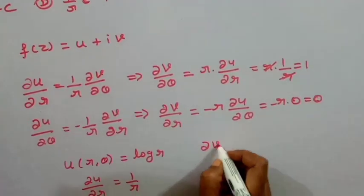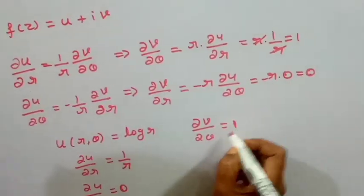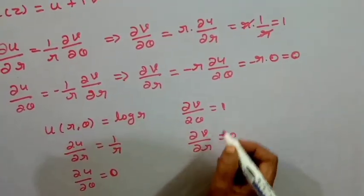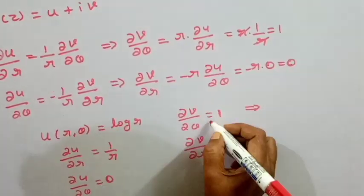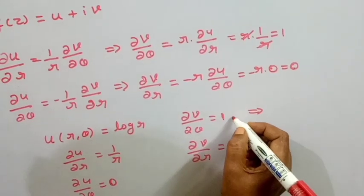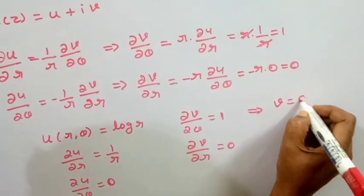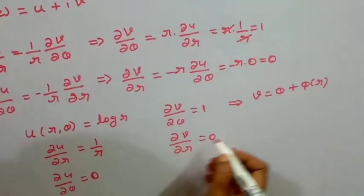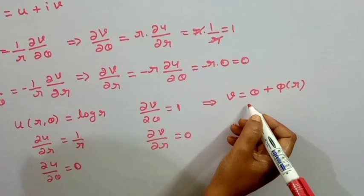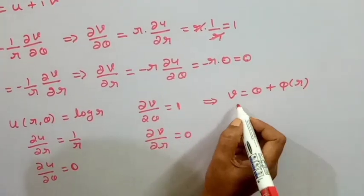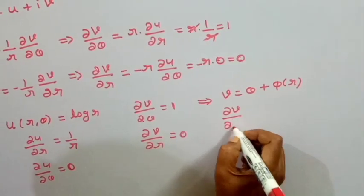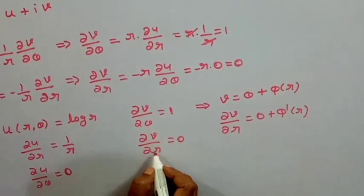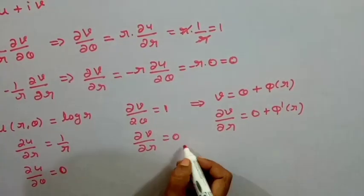Therefore dou v by dou theta is equal to 1 and dou v by dou r is equal to 0. We integrate the first equation: integrating dou v by dou theta with respect to theta gives v equal to theta plus a function of r, which we call phi of r. Since dou v by dou r equals 0, differentiating gives phi prime of r equals 0, so phi of r is constant. Therefore v equals theta plus constant.